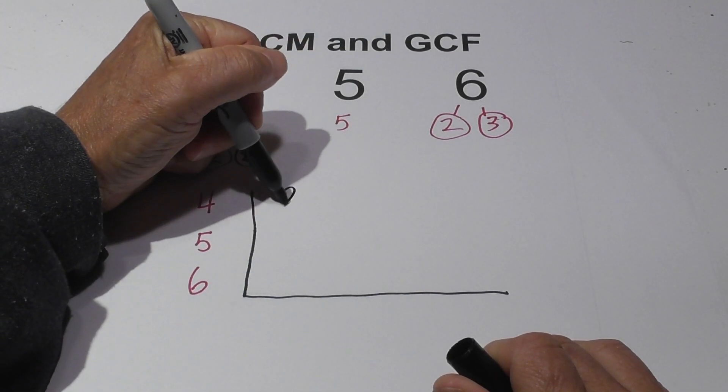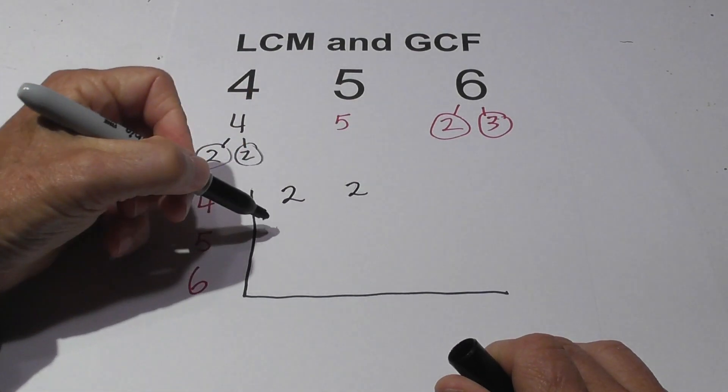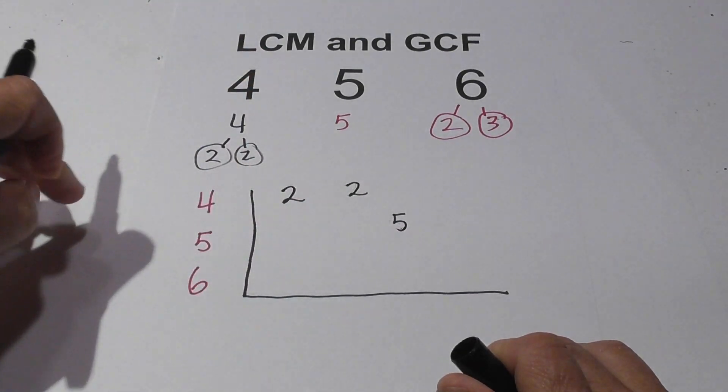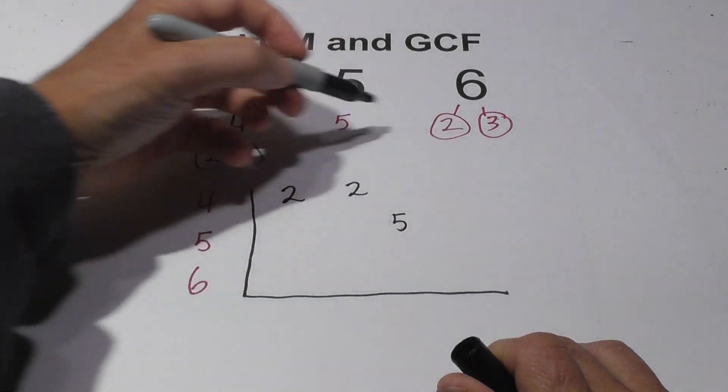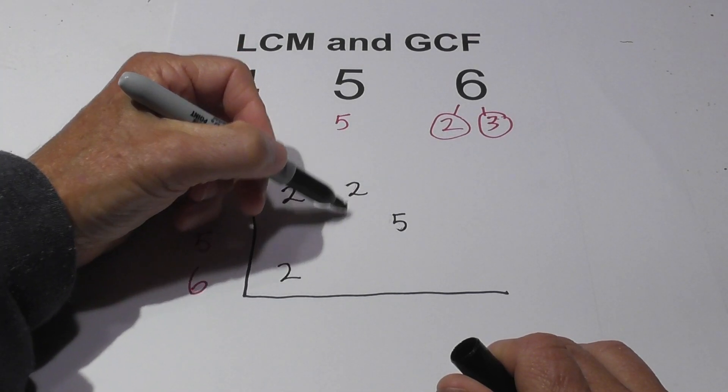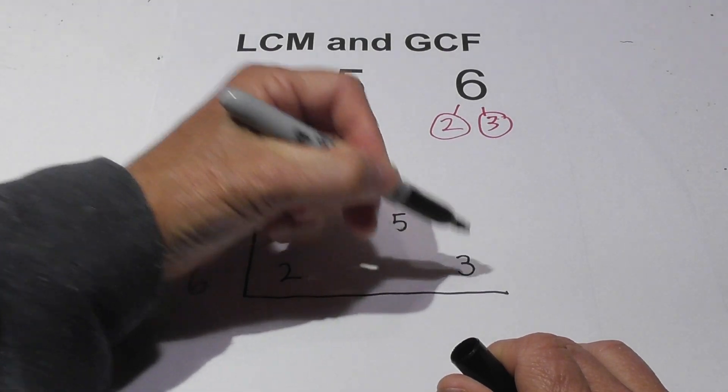So 4 is 2 and 2. 5 is 5, but I'm not going to write it underneath the 2. I'm going to skip, and I think it'll make sense in just a second. And then 6 is 2, and I don't have a 3, so I'm not going to write it here. I don't have a 5, I'm not going to write it here. I'm going to write it here.